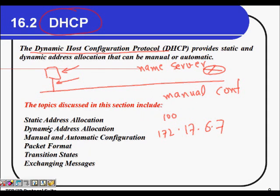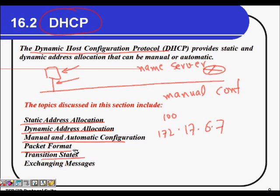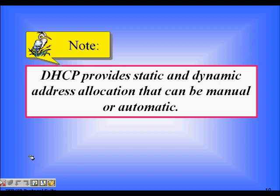Static address allocation is done through manual configuration, while dynamic address allocation is automatic. When a machine comes up, it needs to be given a unique IP address among all computers. We will look at manual and automatic configuration, the packet format, transition states, and message exchange.